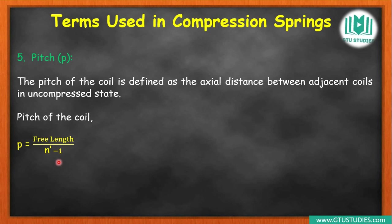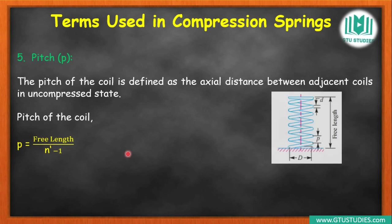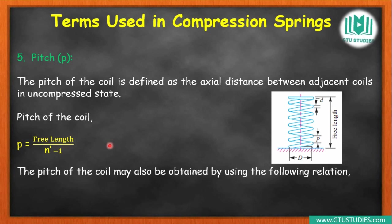Total number of gaps = n' − 1. So pitch = free length / (n' − 1). A second equation for pitch: p = (Lf − Ls) / n' + d, i.e., free length minus solid length (which equals maximum deflection) divided by n', plus the wire diameter d. Both equations can be used to find pitch. Here Lf = free length, Ls = solid length, n' = total number of coils, d = diameter of wire.